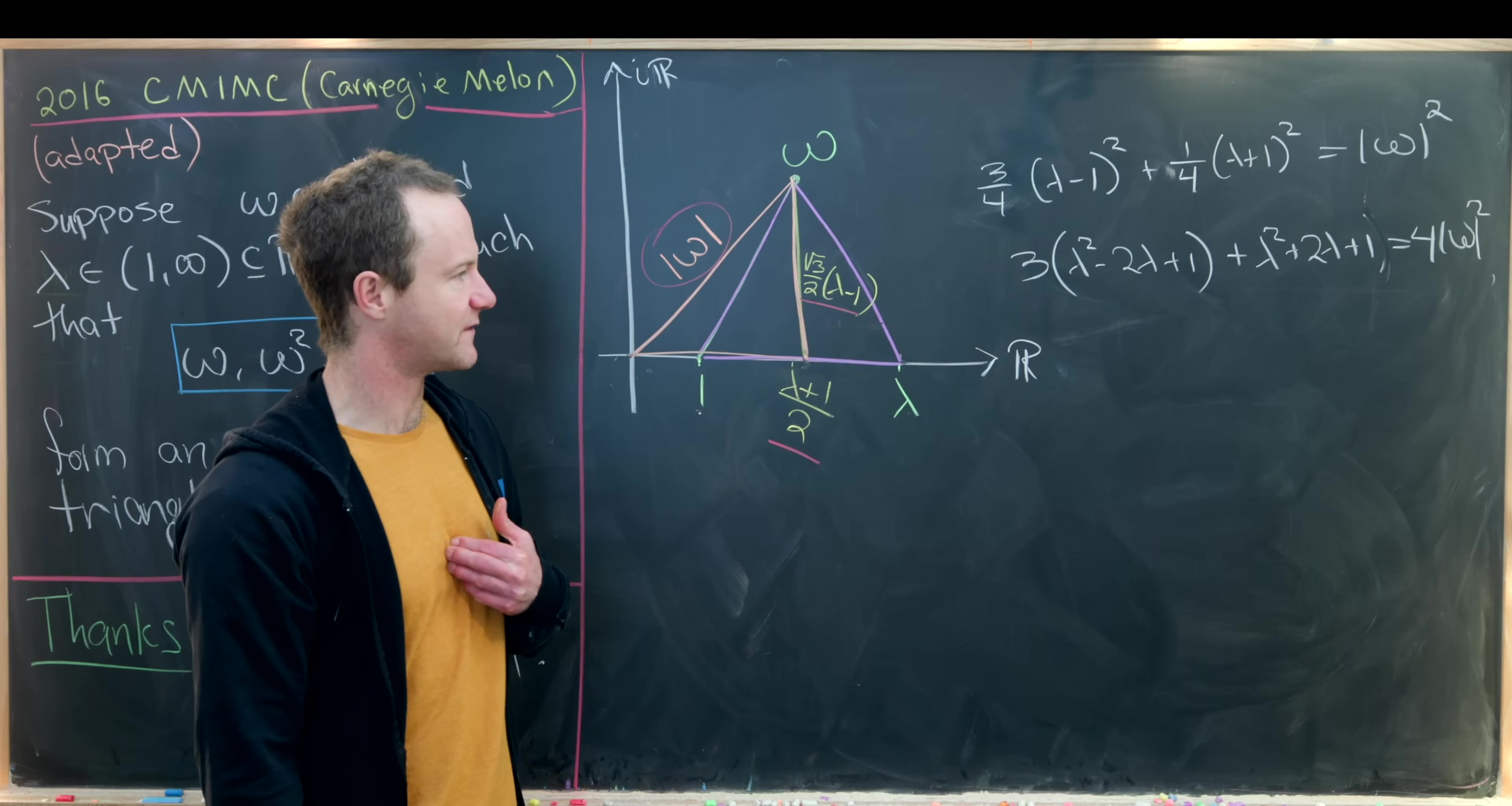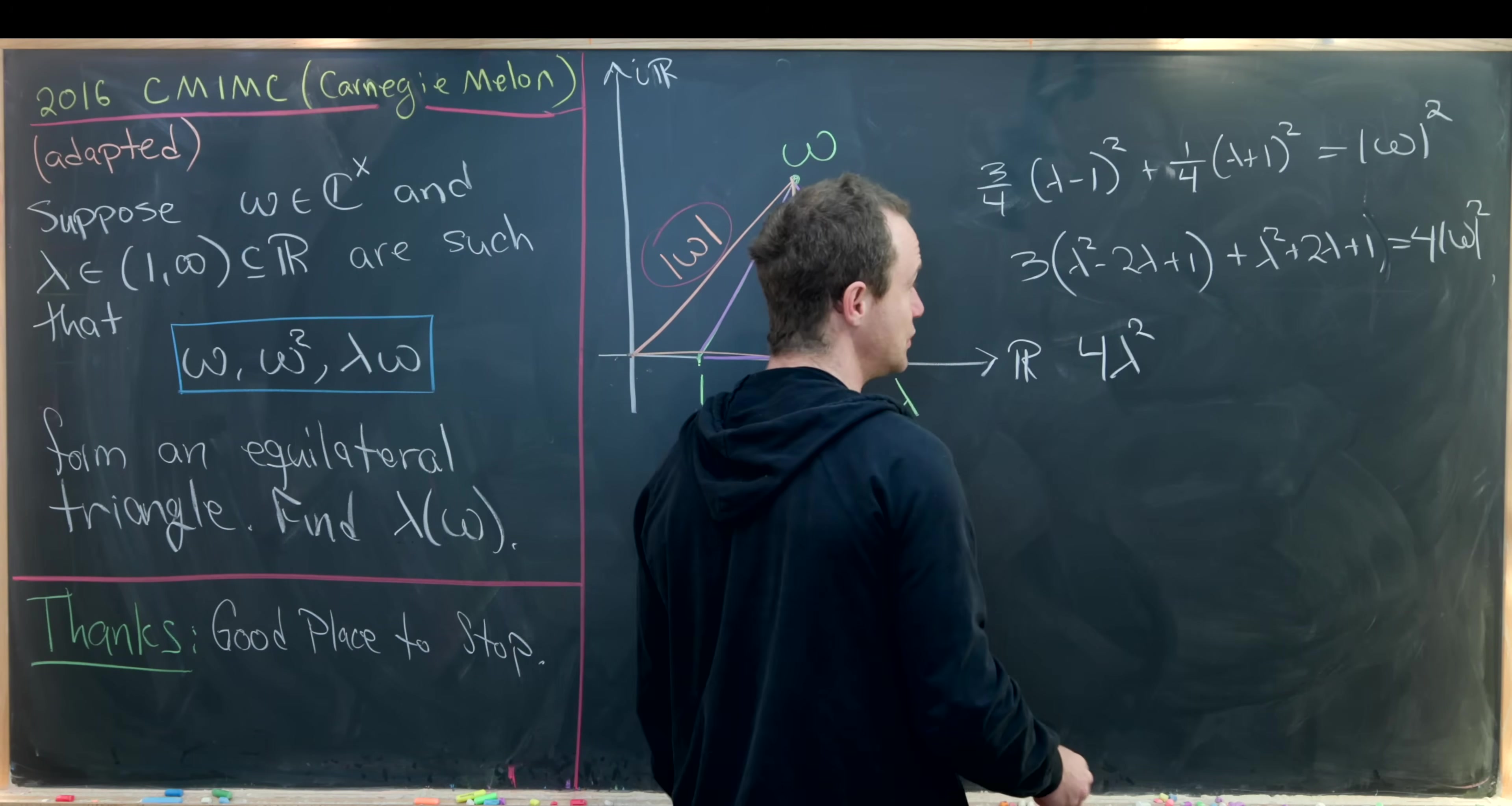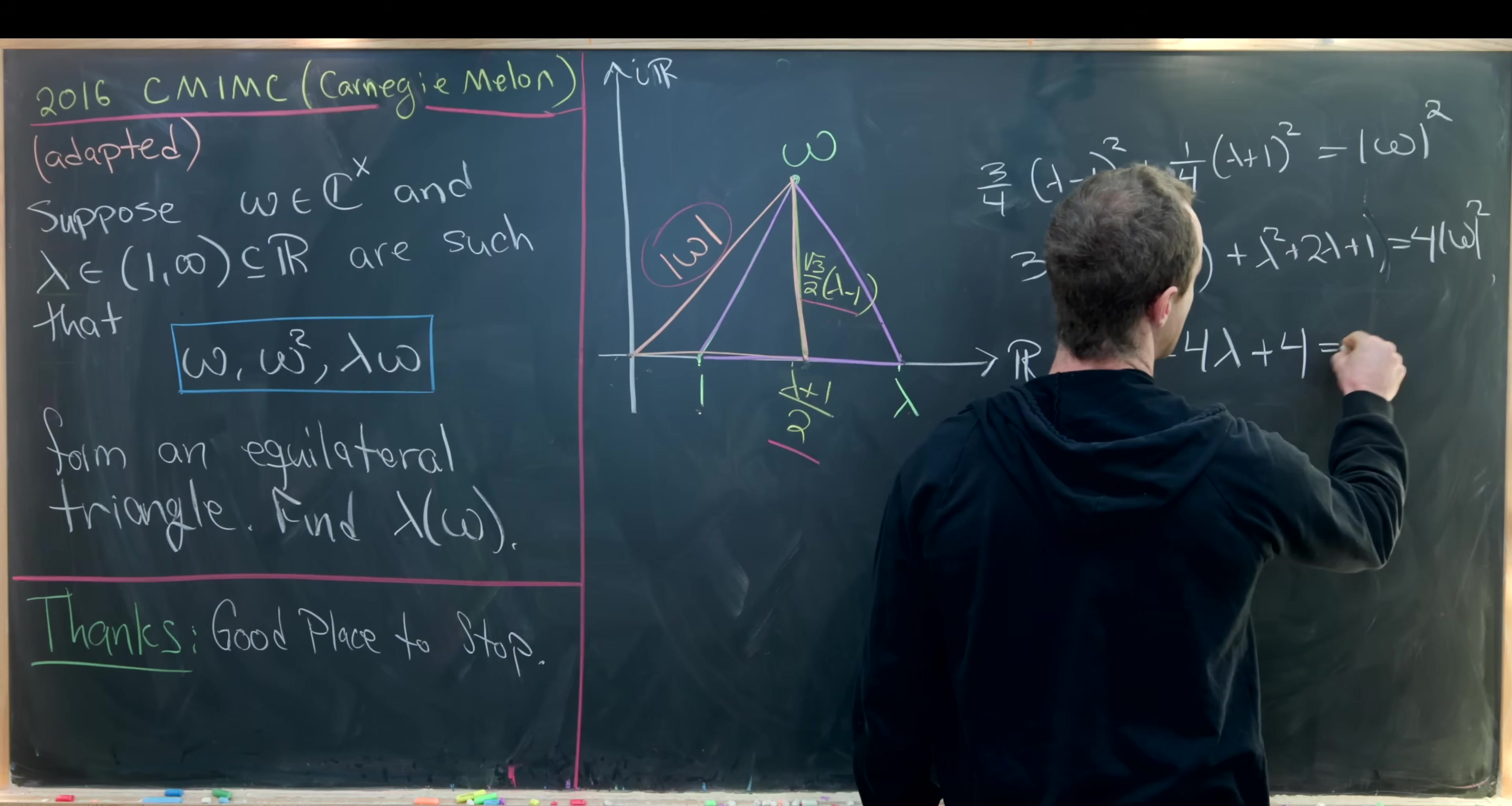So now let's see if we can simplify a little bit. So I have 3 times lambda squared plus lambda squared. That gives me 4 lambda squared. Then I'll have minus 6 lambda plus 2 lambda. So that's going to be minus 4 lambda. And then I have 3 times 1 plus 1. So that'll be plus 4.